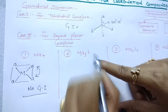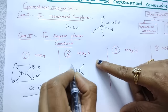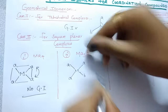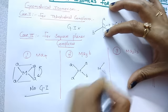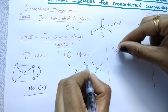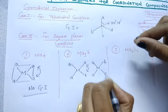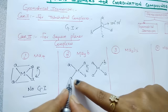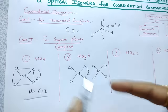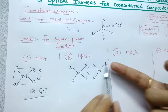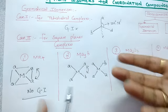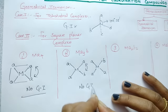Coming to MA3B. Draw the structure: A, A, A, B. Just flip the structure — interchange A and B. What happens is A remains the same, and we get B here and A here. If you observe carefully, perpendicular to A is A and A, and perpendicular to A is B — both structures are the same after interchanging. So there is no geometrical isomerism for MA3B.